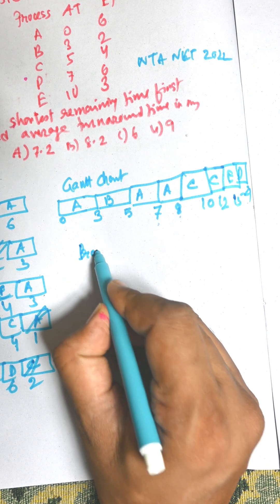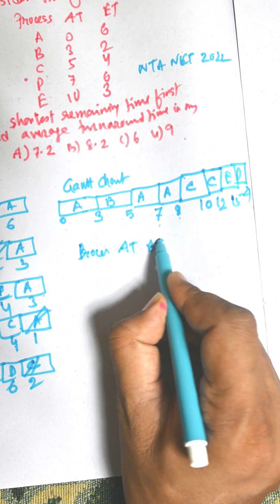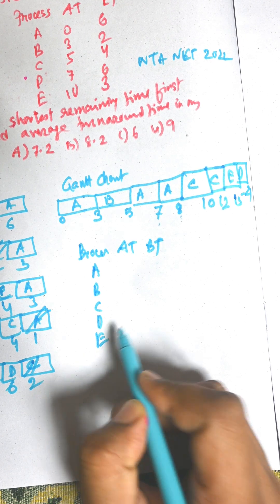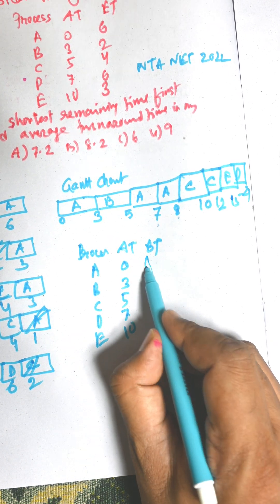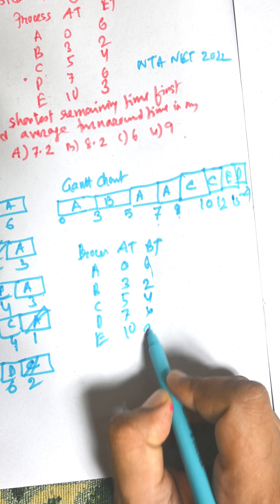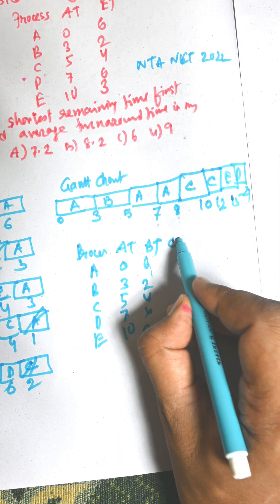That is process, arrival time, burst time. A, B, C, D, E. Arrival time: 0, 3, 5, 7, 10. Burst time is 6, 2, 4, 6, 3. First of all, completion time.